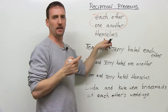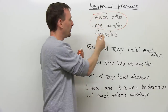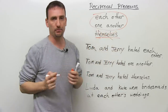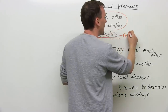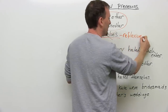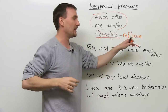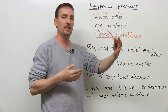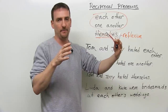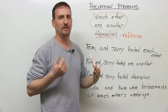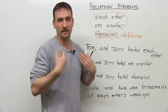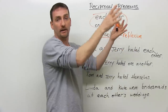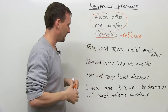Now, quite often people mix these — they mix their use of this with "themselves." "Themselves" is not a reciprocal pronoun. "Themselves" is called a reflexive pronoun. A reflexive pronoun is used when you have the subject acting on the object and the object is the same as the subject. So: "I hit myself." I am the subject, I am also the object. It's reflecting back to me. Reciprocal is always somebody else or other people involved besides me.